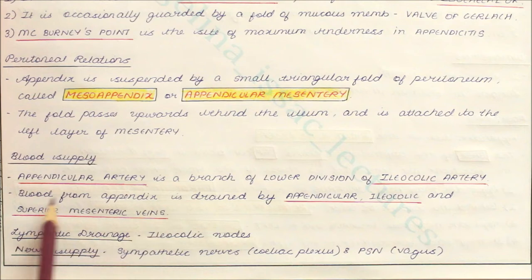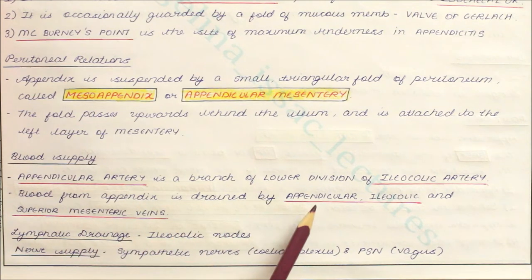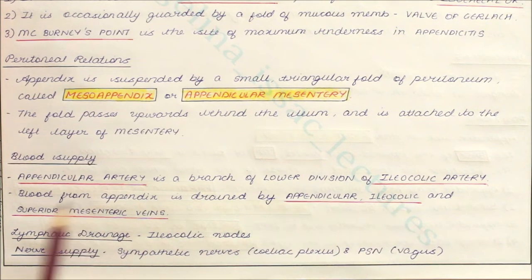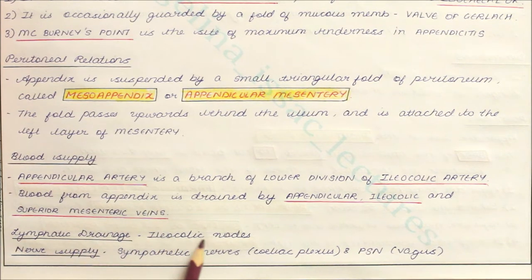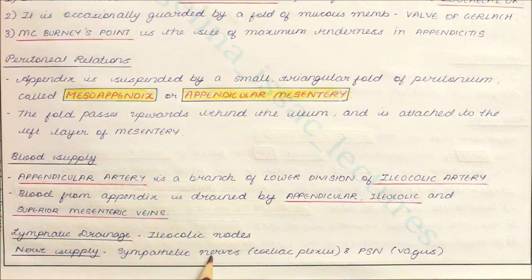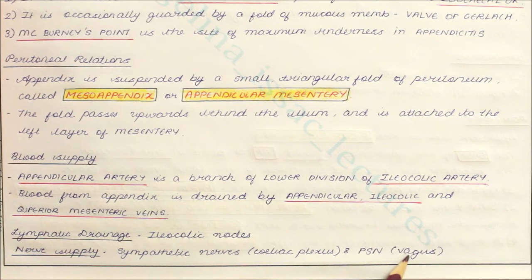Blood from the appendix is drained by the appendicular, ileocolic, and superior mesenteric veins. The lymphatic drainage is by the ileocolic nodes. The nerve supply is by sympathetic nerves via the celiac plexus and parasympathetic nerves via the vagus nerve.